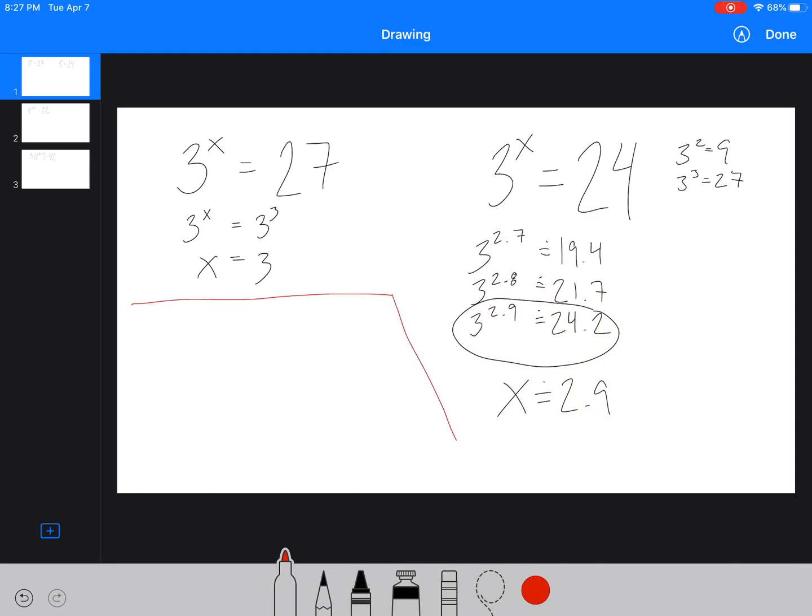Which isn't great. So what we can actually do, and we're going to learn all the rules behind this next year, this is something that you can just memorize. We have 3 to the x equals 24.